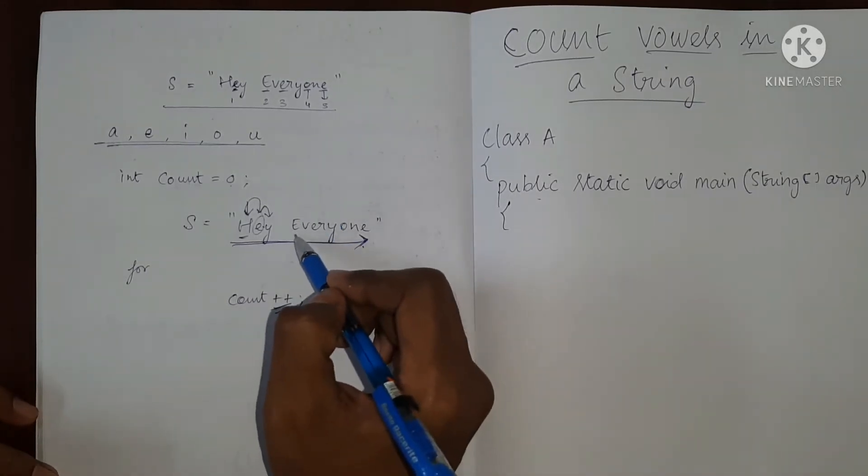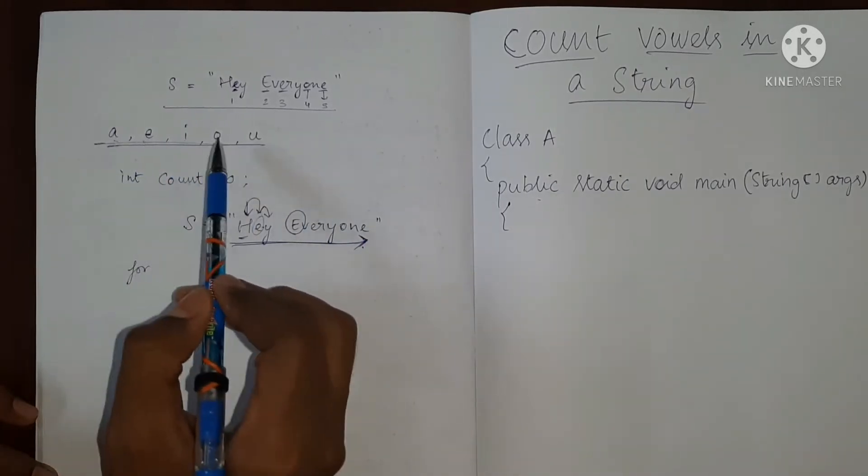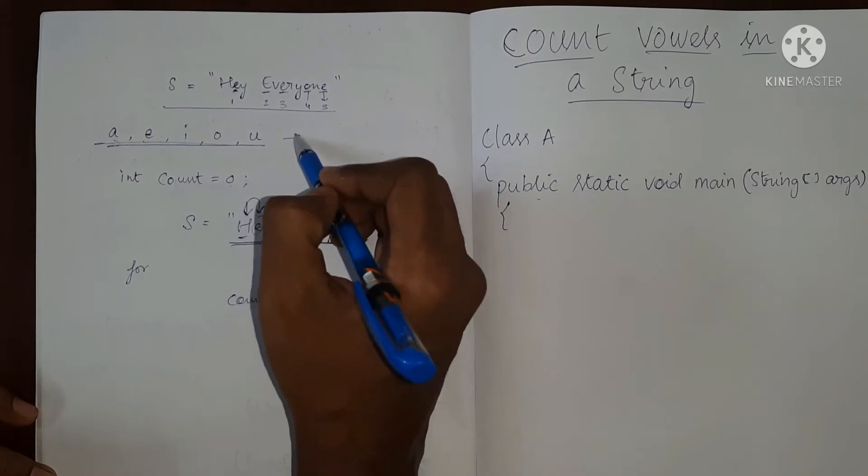So if you note here, we have a capital E over here, but we are checking for A, E, I, O and U, which is of lowercase.